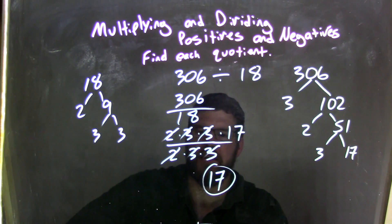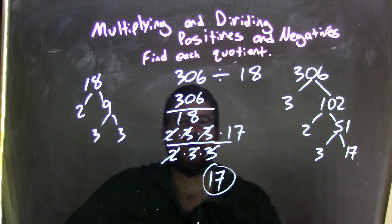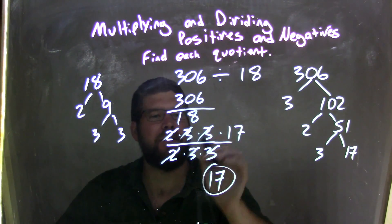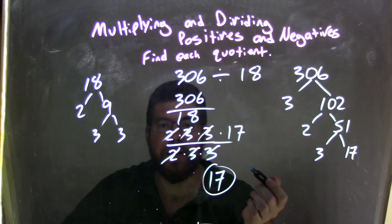So I wrote that in the denominator. 2 times 3 times 3 is equal to 18. So, now, we can cancel out the 2s, cancel out the 3s, and we're left with 17 in the numerator, and 17 over 1 is just 17, our final answer.